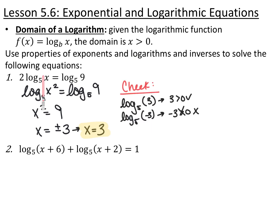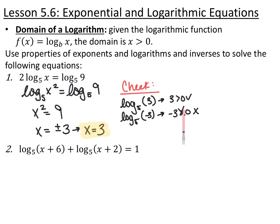If I plug in 3 for x, I get log base 5 of 3, and the inside is 3, which is greater than zero — fine. If I plug in negative 3, I get log base 5 of negative 3, and the inside is negative 3, which is not greater than zero. So negative 3 is an extraneous solution, and my only answer is x equals 3.